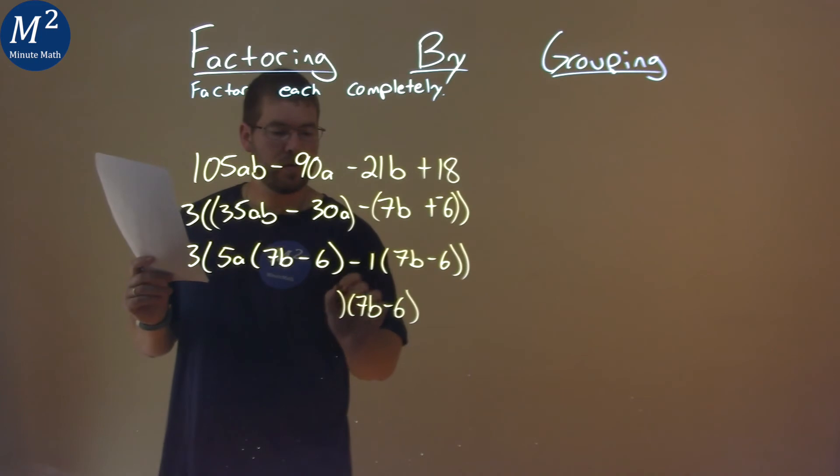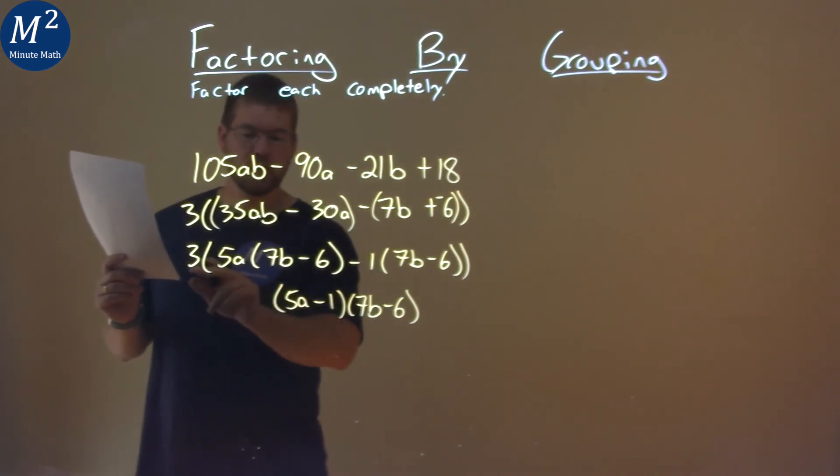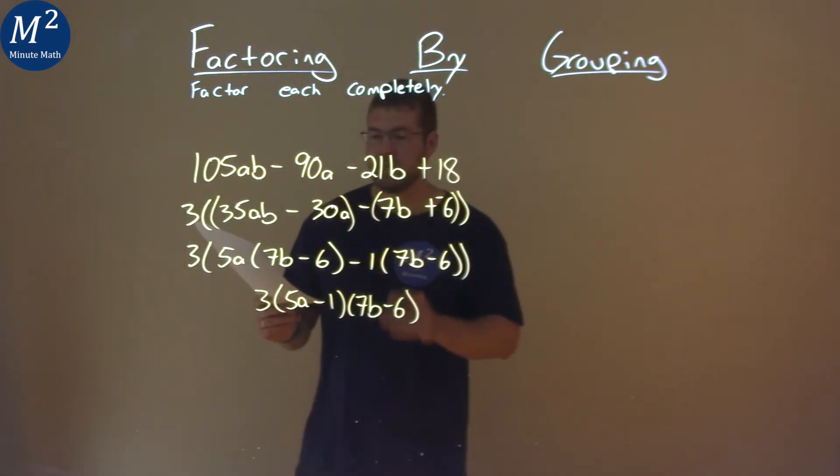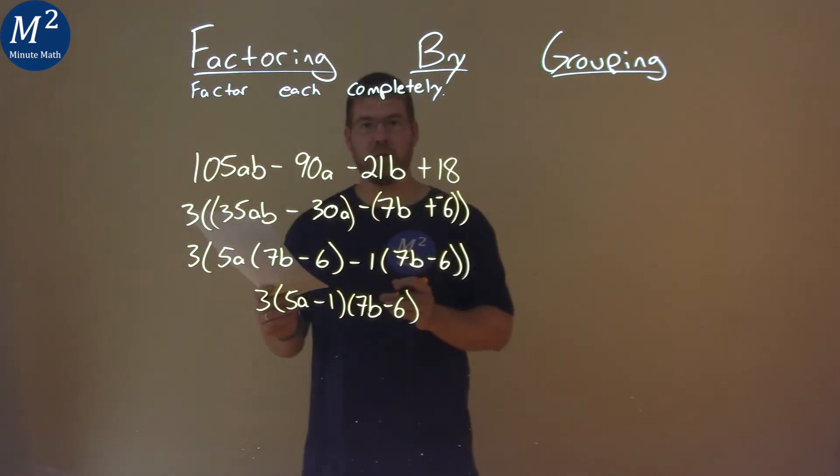And I'm left with the 5a minus 1. Don't forget to bring down the 3. And our final answer here is 3 times 5a minus 1 times 7b minus 6.